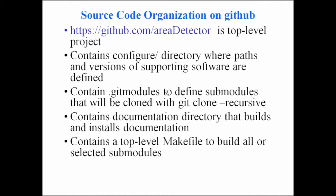The top-level area detector has a configure directory, and by default that's the only place where you need to define the paths and versions of supporting software like EPICS base, asyn, and if building IOCs, things like autosave and calc. It contains a file defining the submodules for git clone recursive, a documentation directory that builds and installs all documentation, and a top-level makefile that builds all modules in the right order respecting dependencies, even with parallel make.